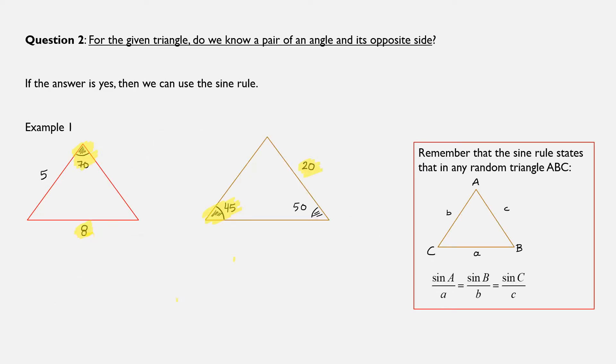And that question is the following: For the triangle we were given, do we know a pair of an angle and its opposite side? If the answer is yes, then we were given these facts so that we can apply the sine rule.